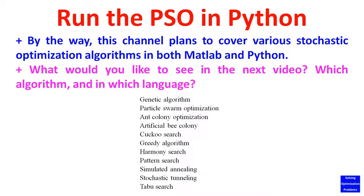By the way, this channel plans to cover various stochastic optimization algorithms in both MATLAB and Python. There are many stochastic optimization algorithms, such as genetic algorithm, particle swarm optimization, ant colony optimization, artificial bee colony, cuckoo search, greedy algorithm, harmony search, pattern search, simulated annealing, stochastic tunneling, taboo search, etc. So what would you like to see in the next video? Which algorithm, and in which language?